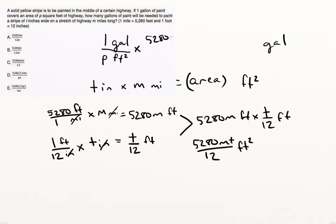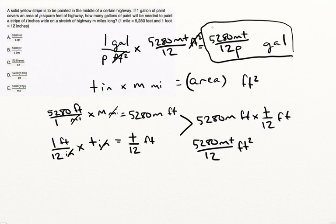So we get 5,280 m t over 12 in units of feet squared. So if I multiply this and this together, we get feet squared canceling, and then we get our answer, 5,280 m t over 12 p in gallons alone. And this is your answer, which matches answer A.